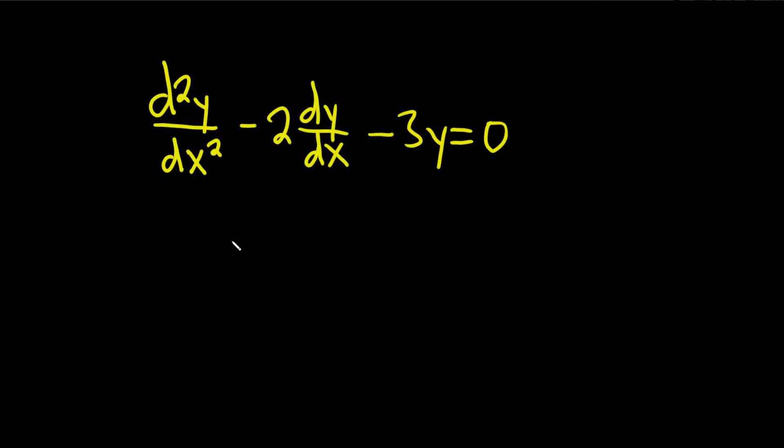So we have a linear homogeneous differential equation with constant coefficients. And so to solve this, we'll start by writing down the characteristic or auxiliary equation.